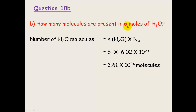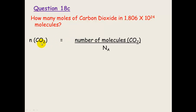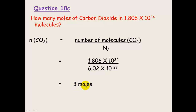Worked solution 18C — how many moles of carbon dioxide in 1.806×10²⁴ molecules of CO₂? One mole of carbon dioxide contains 6.02×10²³ molecules. Number of moles = number of molecules ÷ Avogadro's constant = 1.806×10²⁴ ÷ 6.02×10²³ = 3 moles. In other words, 3 × 6.02×10²³ molecules of carbon dioxide. Hopefully these last few examples have shown you what is going on.